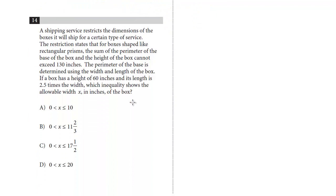Let's take a look at question number 14. A shipping service restricts the dimensions of a box it will ship for a certain type of service. The restriction states that for boxes shaped like rectangular prisms, the sum of the perimeter of the base of the box and the height of the box cannot exceed 130 inches. The perimeter of the base is determined using the width and length of the box.